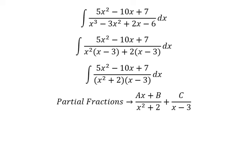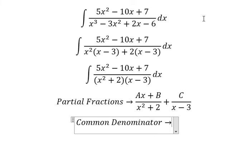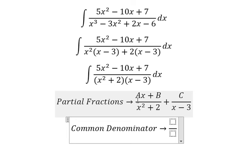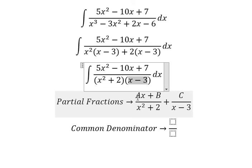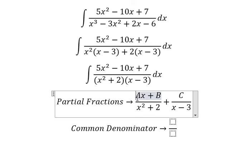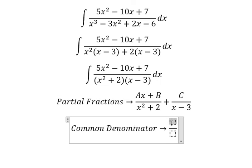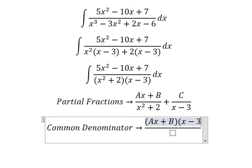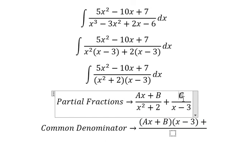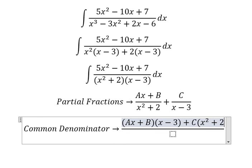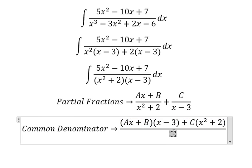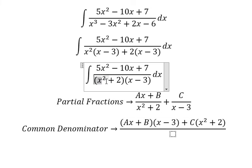Now we find the common denominator. This term is missing x minus 3, so we multiply by x minus 3. For C, this term is missing the x squared plus 2 factor. So the full common denominator should be x squared plus 2 times x minus 3.